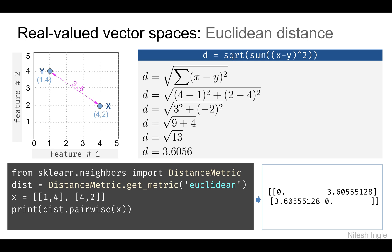Now let's look at the Euclidean distance, which most of you would already be familiar with. Let's say we have point x at coordinates (4, 4) and point y at coordinates (2, 1), with the x-axis representing feature one and the y-axis representing feature two. We can calculate the Euclidean distance using the formula: take the difference between the x and y coordinates, square them, sum them up, and then take the square root. The Euclidean distance here is d = 3.6056.